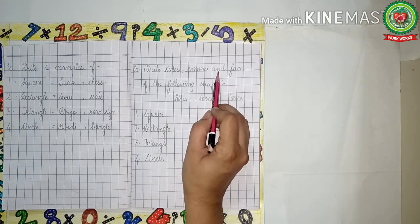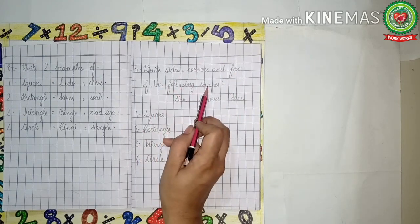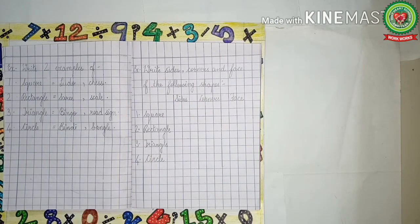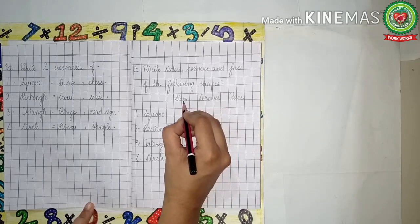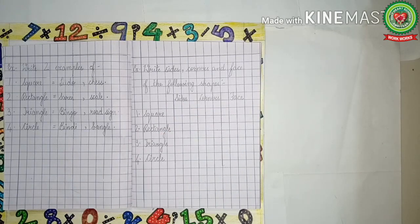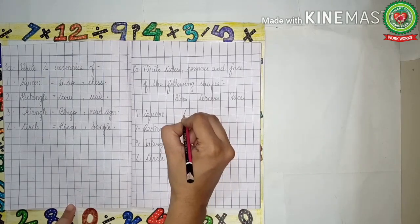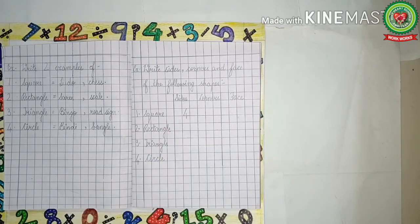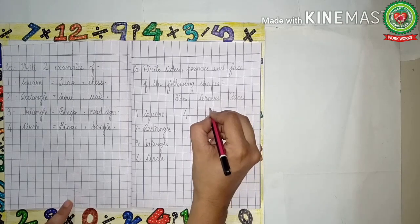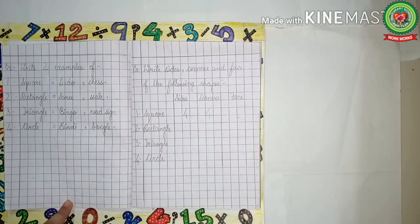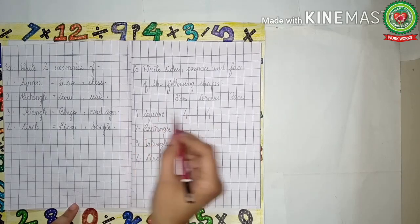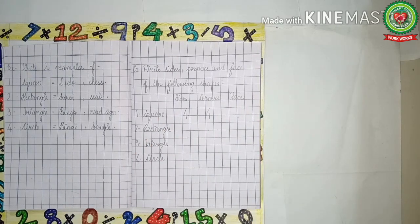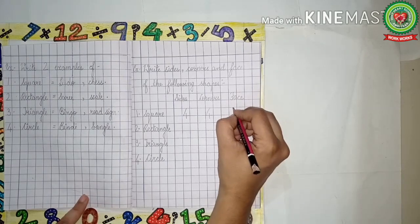We will write how many sides, corners, and faces each shape has. Number one is square. A square has four sides, so we will write four. Square has four corners, so we will write four. Square has one face, so we will write one.